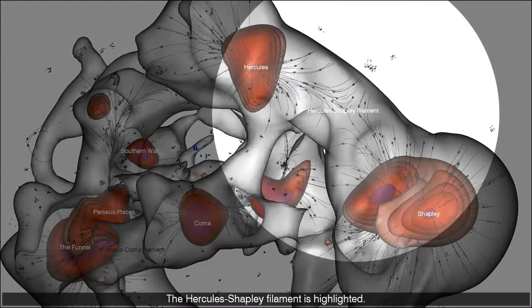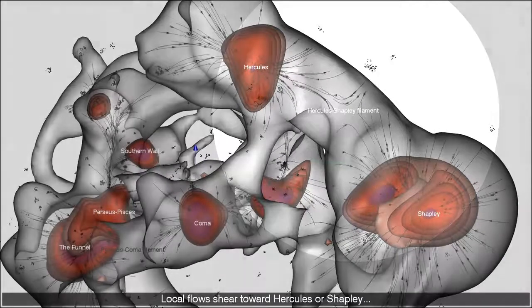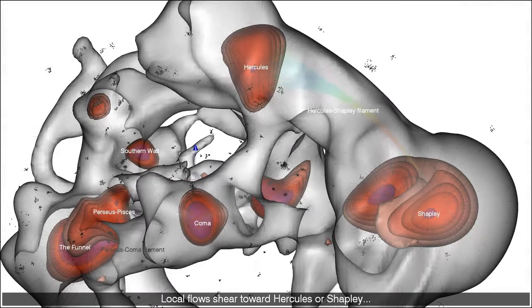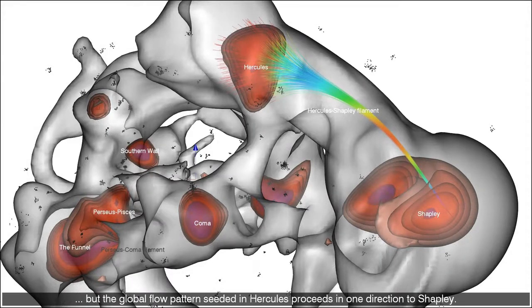The Hercules Shapley filament is highlighted. Local flows shear toward Hercules or Shapley, but the global flow pattern seeded in Hercules proceeds in one direction to Shapley.